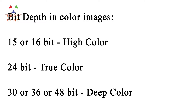If we have a color image, we have a lot of bit depth. If we have 15-bit or 16-bit, we have high color. If we have 24-bit, we have true color — used in a lot of screens and photos. We have 30-bit, 36-bit, 48-bit — we have deep color.